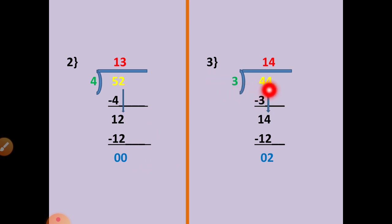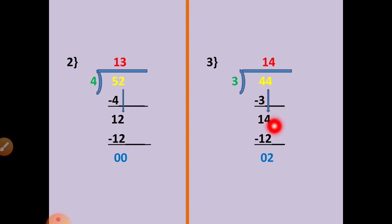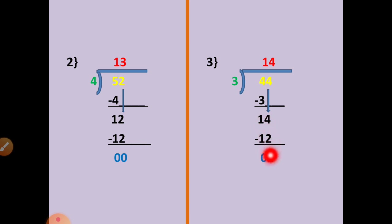Question number 3: 44 divided by 3. First we will take the first number. 3 ones are 3. 4 minus 3 equals 1. Copy the next number — that is 4. Now this number is 14. In the table of 3, 14 will not come, but the smaller number is there. 3 fours are 12. 4 minus 2 equals 2, 1 minus 1 equals 0. Here you will write divisor, dividend, quotient, and remainder.